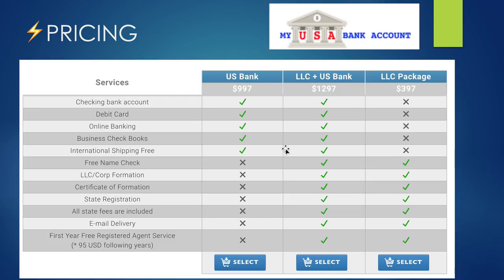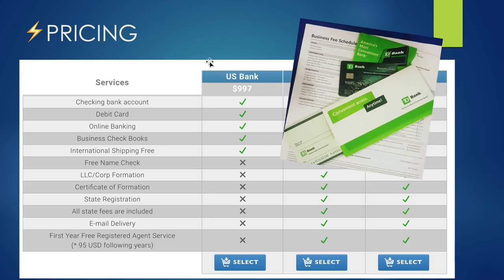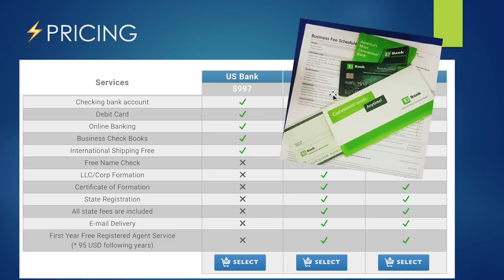The most interesting ones are the bank account package and the LLC plus bank account package. The bank account package includes a checking account, debit card, online banking, a business checkbook, and international shipping. In my case they shipped to Brazil and it took about two weeks. There's also an express shipping option to receive it in about a week. It won't always be TD Bank — they work with most major US banks, so it depends each time, but it will always be a big player.